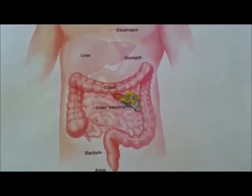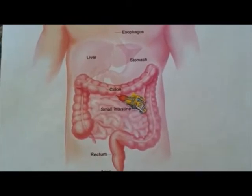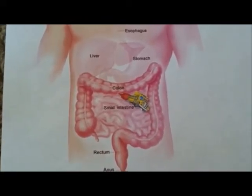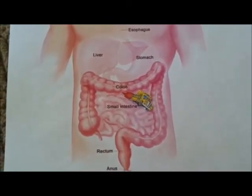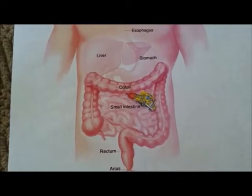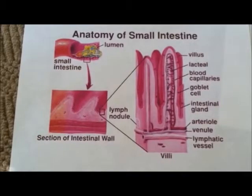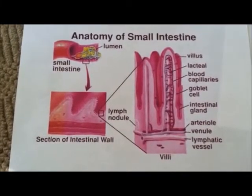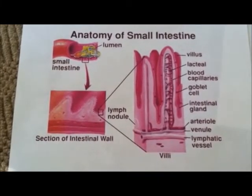Now they find themselves in the small intestine, where nutrients and water are absorbed into the blood through the microvilli that line the walls of the small intestine.